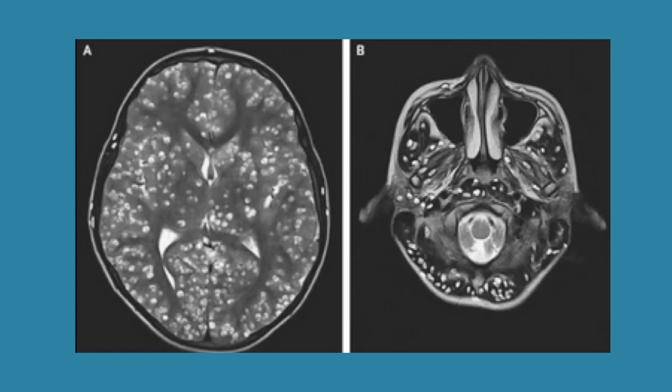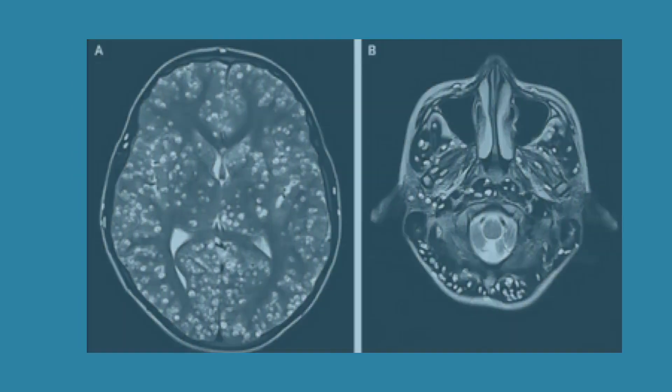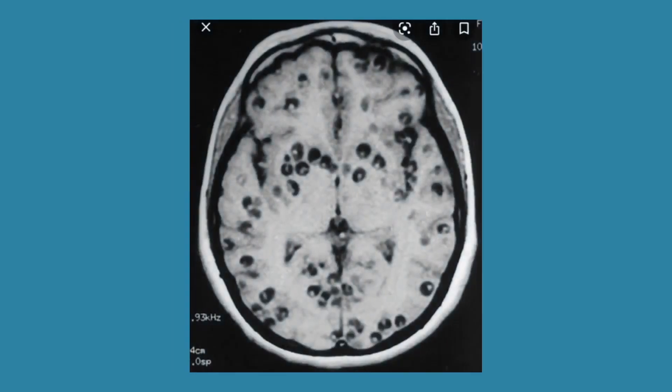We have to report this in our findings. Coming to the next set of images, we can see this T1 weighted image in which the cystic area is appearing hypointense and the eccentric scolex that we are seeing is isointense.